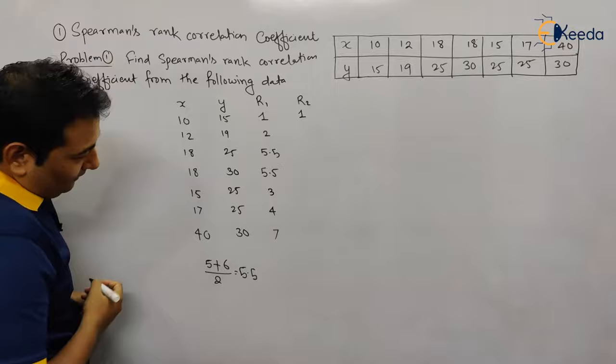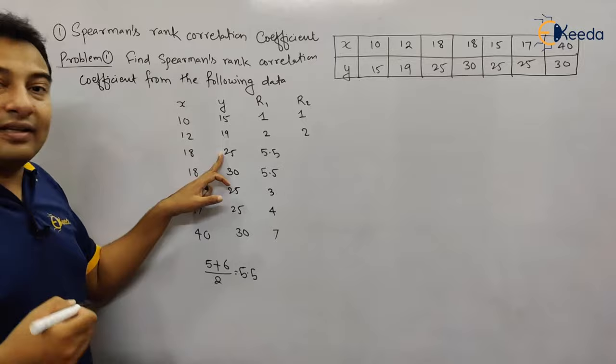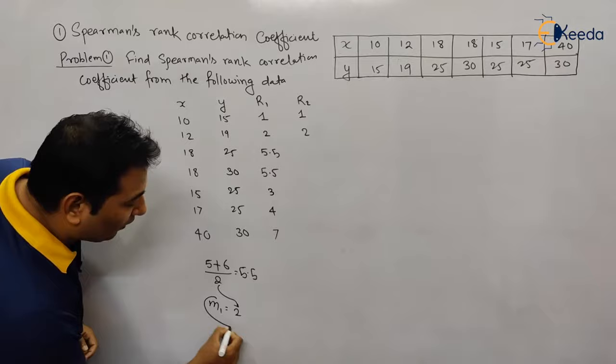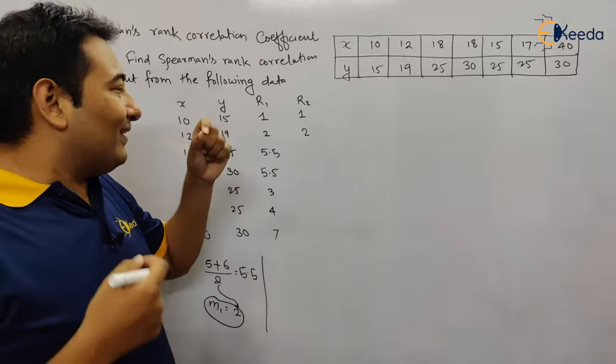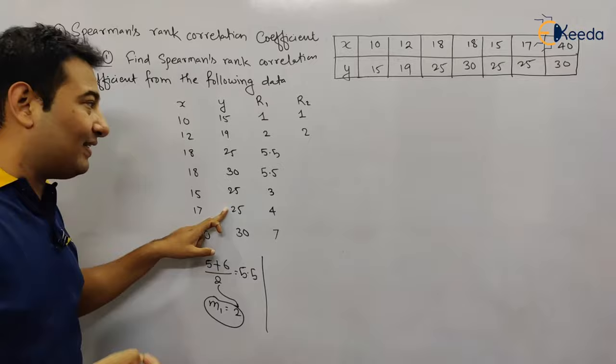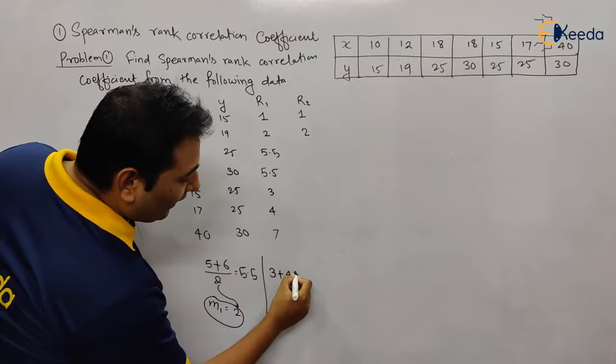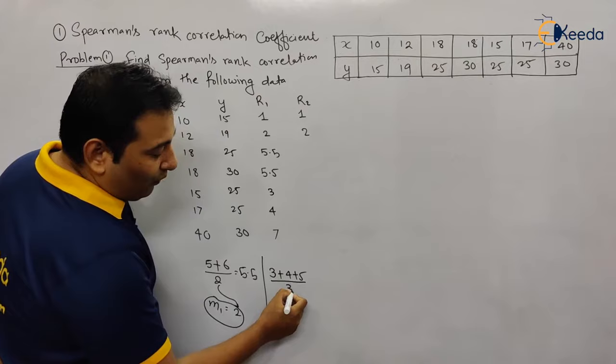Since 25 is repeated three times, it will occupy positions 3, 4, and 5. We take the average: (3 + 4 + 5) / 3 = 4. So rank 4 is assigned to all three 25s. This value m2 = 3, meaning the second repeated value appears three times. The first repeated value appeared twice, so m1 = 2.